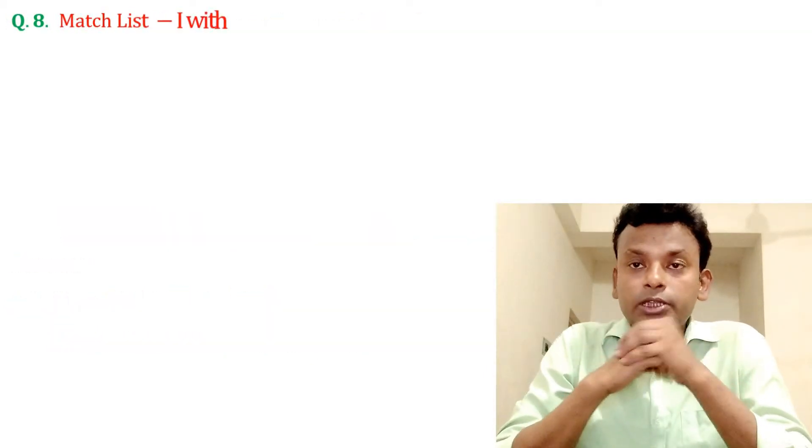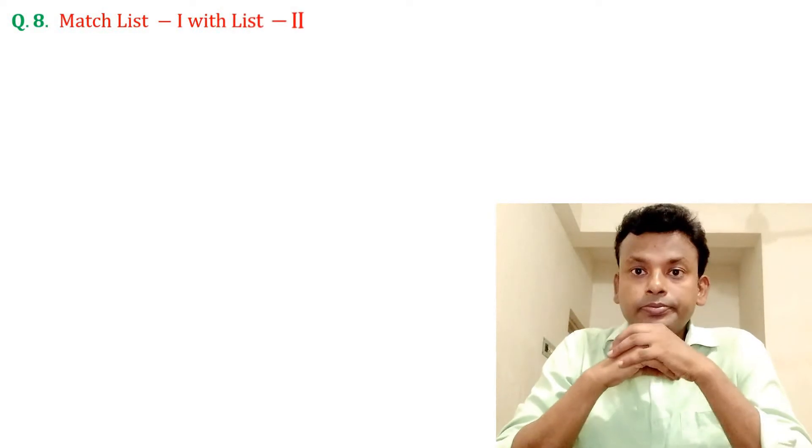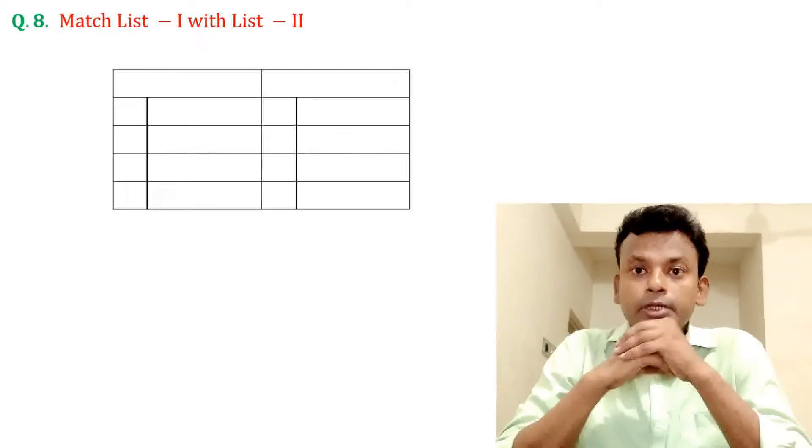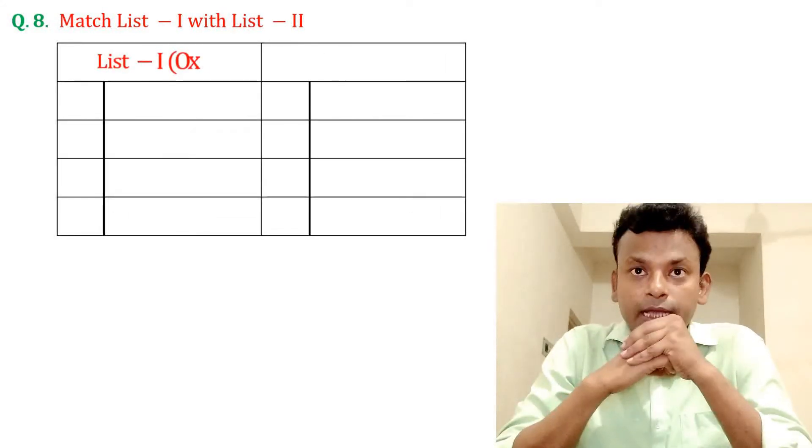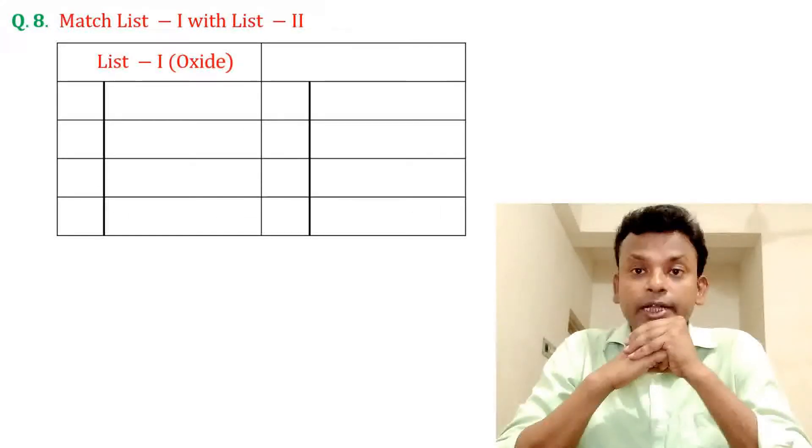Question 8: Match list 1 with list 2. List 1 contains oxides and list 2 contains their nature.